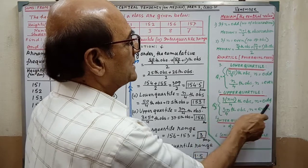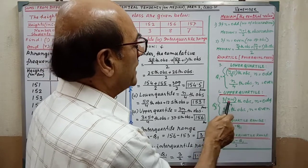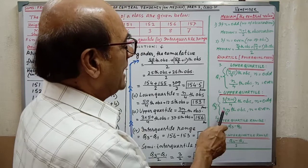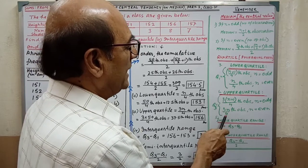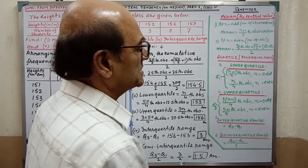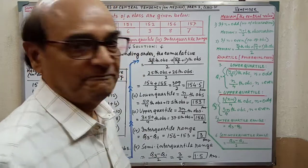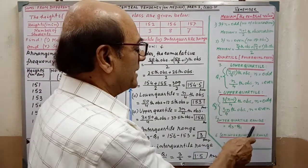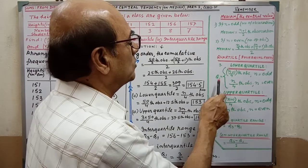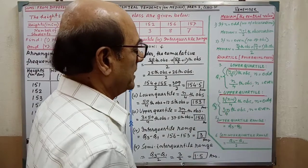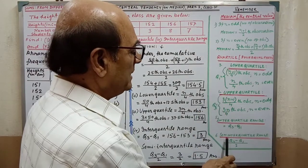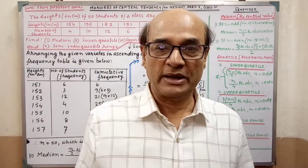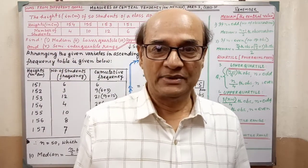For the upper quartile in the odd case, Q3 is the 3(n+1)/4 th observation, and in the even case it is the 3n/4 th observation. The inter-quartile range is Q3 minus Q1, and the semi-inter-quartile range is (Q3 minus Q1) divided by 2. These are the formulas you have to remember.